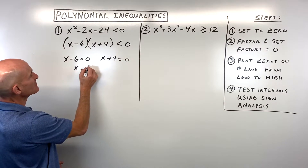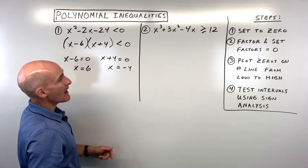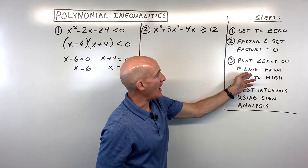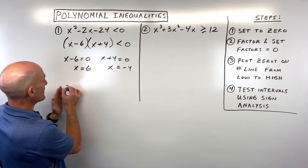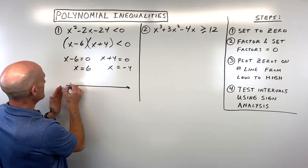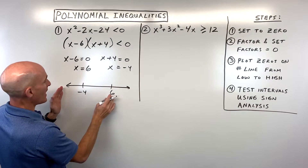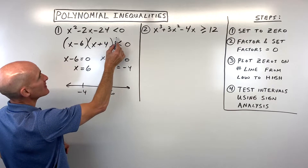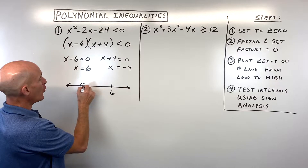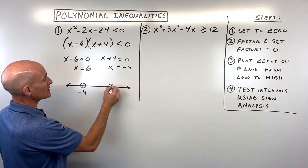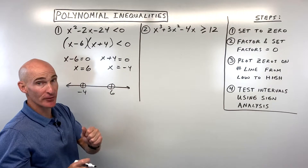Add 6 to both sides to get x equals 6; subtract 4 to get x equals negative 4. Now plot the zeros on the number line from lowest to highest — so negative 4 and then 6. Because the inequality is less than but not equal to, these are open circles; it doesn't include negative 4 or 6. If it were less than or equal to, we'd use closed circles.